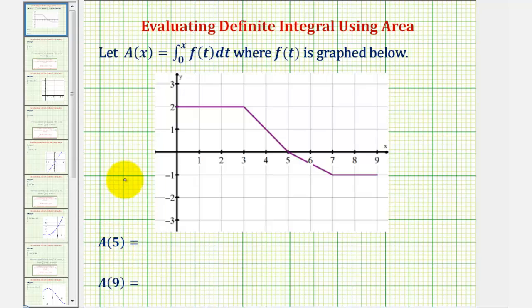So for A(5), we'll substitute five for x, giving us the definite integral of f(t) from zero to five. And therefore A(9) would be the integral of f(t) from zero to nine.